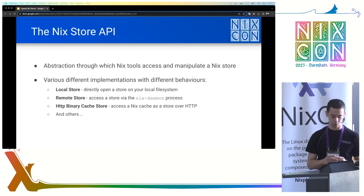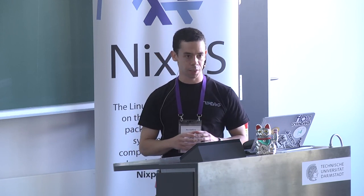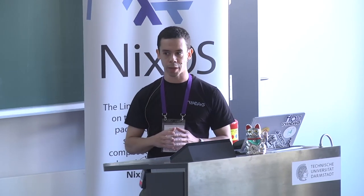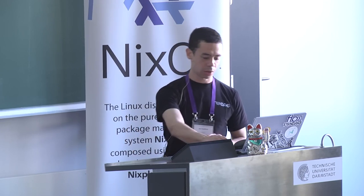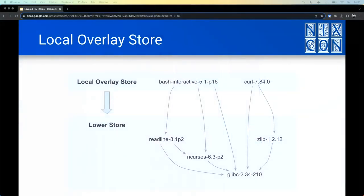Returning to the main point of the talk, what we've done is add a new type of Nix store. Because it's based on the local store and behaves much the same way, we've called it the local overlay store. The main difference is that the local overlay store takes a URI to another store as a parameter. Whenever it's queried for a path and that path doesn't exist in the overlay, we forward the query down to the lower store. This effectively gives us the union of the metadata in the lower store and the overlay.